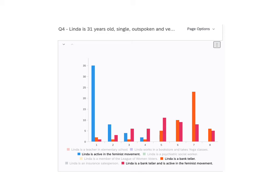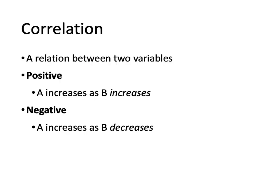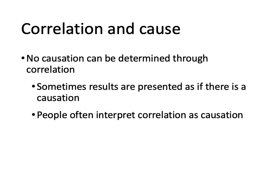The final example in this lecture: correlational and causal reasoning. We all know what a correlation is — it's a relationship between two variables. A positive correlation means if variable A increases, B increases along with it. A negative correlation is where if A increases, B decreases. We also know that no causation can be determined through correlation alone. Scientifically, we're well aware that although things may be correlated, there may not be a causal relationship. But people make this mistake often — sometimes results are presented as if there's causation, and sometimes people interpret correlation as causation.